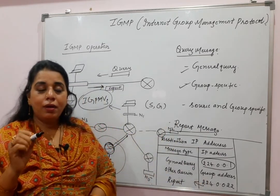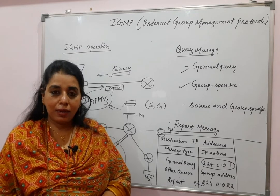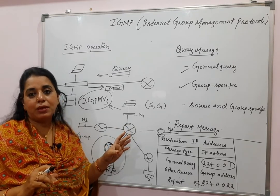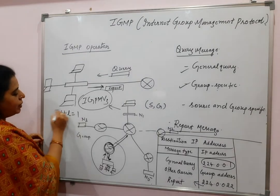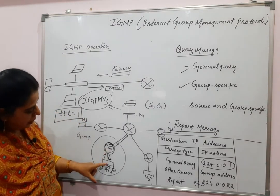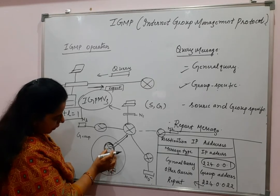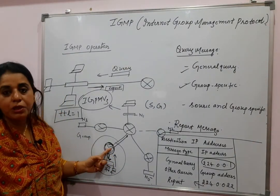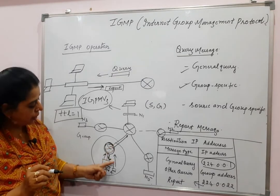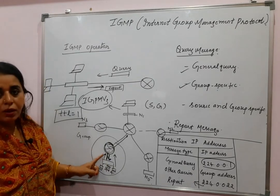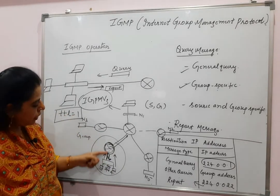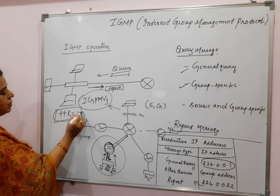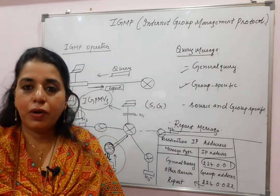A one-mark thinking question can be asked: why does the IGMP message use a TTL value equal to 1? The answer is that the hop count is only 1. When the report message goes toward the router, it is sent to the directly connected router at a distance of 1 hop only. So TTL is set to 1, and once it reaches the router, the TTL value becomes 0.